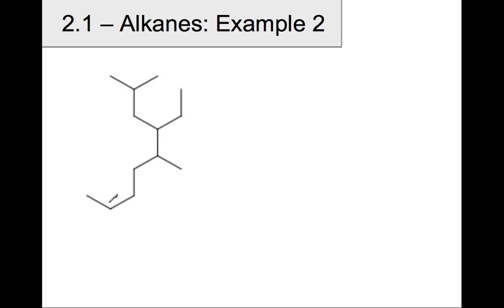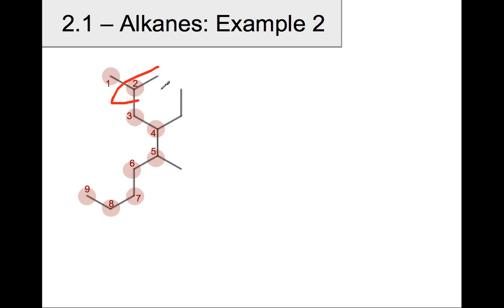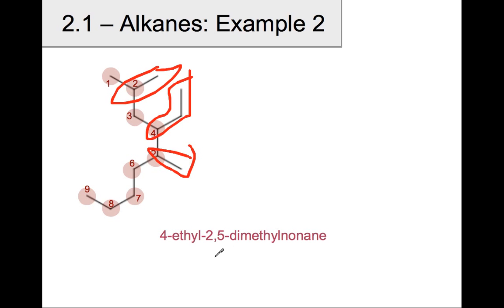Let's number these carbons. What's the longest carbon chain we can find here? We should probably start at this side because it looks more substituted. Carbon 1, 2, 3, 4, 5, 6, 7, 8, 9 — that will make it a nonane. I have a methyl group here, a methyl group here, and an ethyl group here, which gives me 4-ethyl, because it's hanging off carbon 4. 2,5-dimethyl again, hanging off the 9-carbon chain.